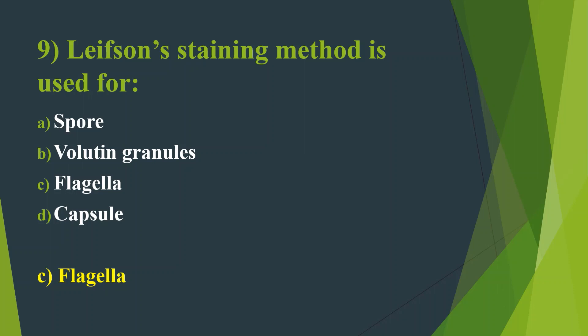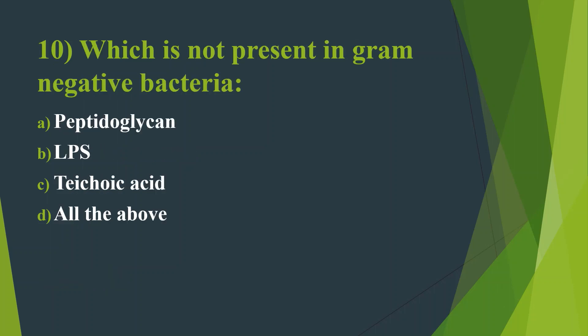Tenth question: Which is not present in gram-negative bacteria? Option A: Peptidoglycan. Option B: LPS (lipopolysaccharides). Option C: Teichoic acid. Option D: All of the above. Here the answer is Option C, Teichoic acid.